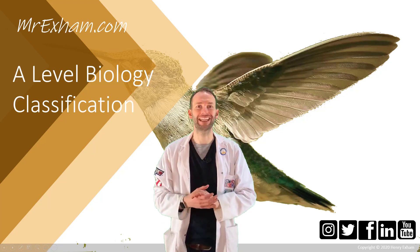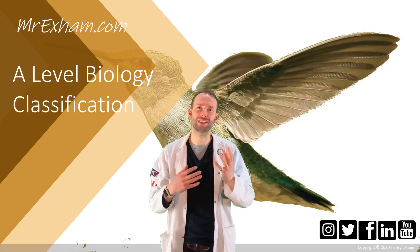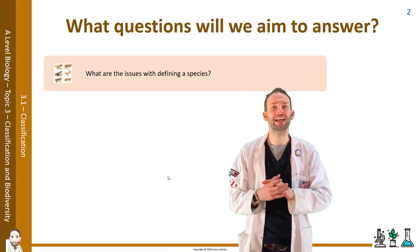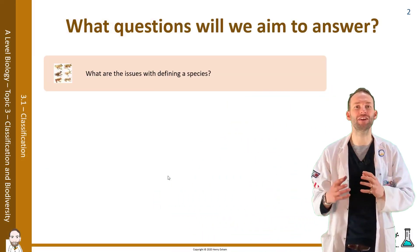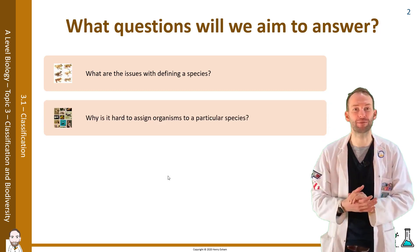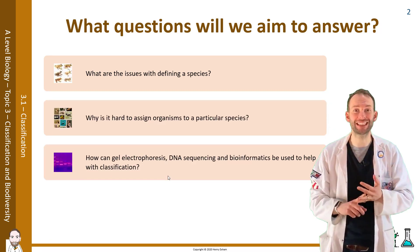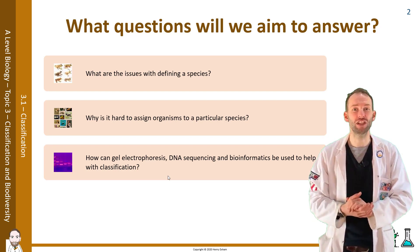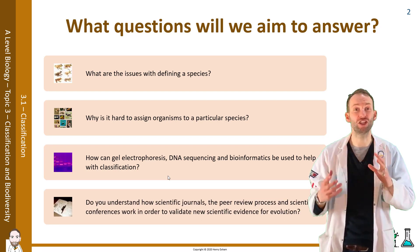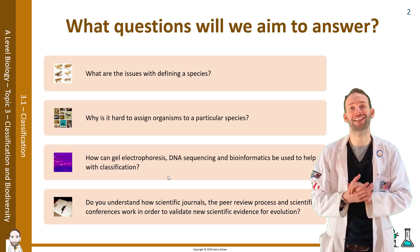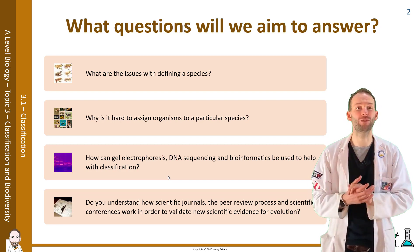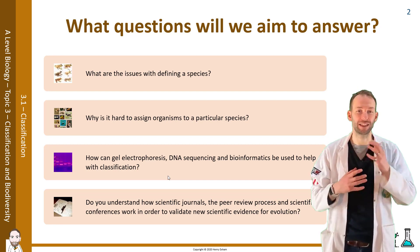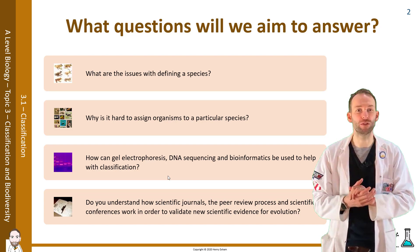In this lesson on classification we'll look at the issues surrounding defining what a species actually is and why it's hard to assign organisms to a particular species. We'll look at how gel electrophoresis, DNA sequencing and bioinformatics can be used to help with classification, and we'll look at how scientific journals, the peer review process, and scientific conferences work to validate new scientific evidence for evolution and how science works more generally.